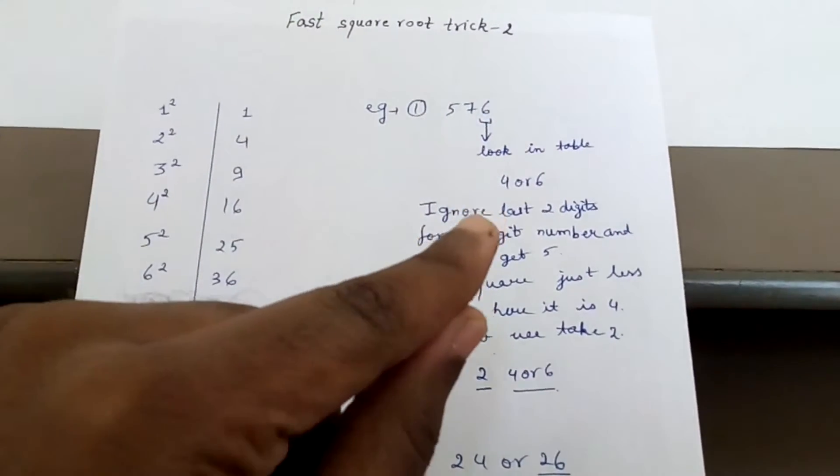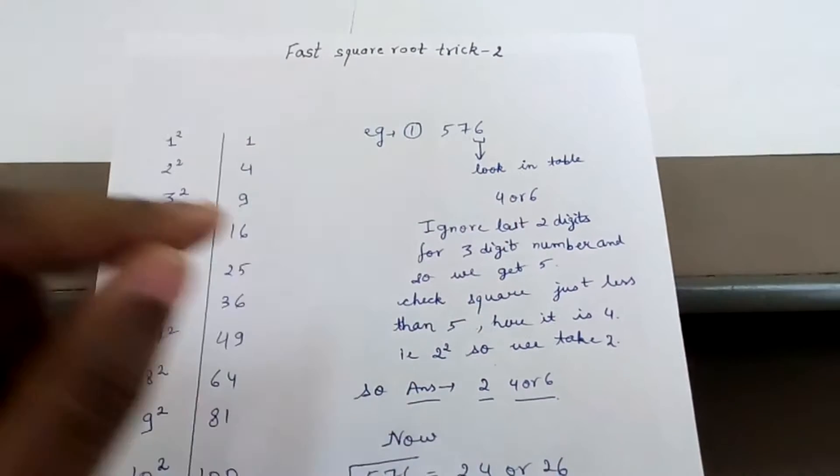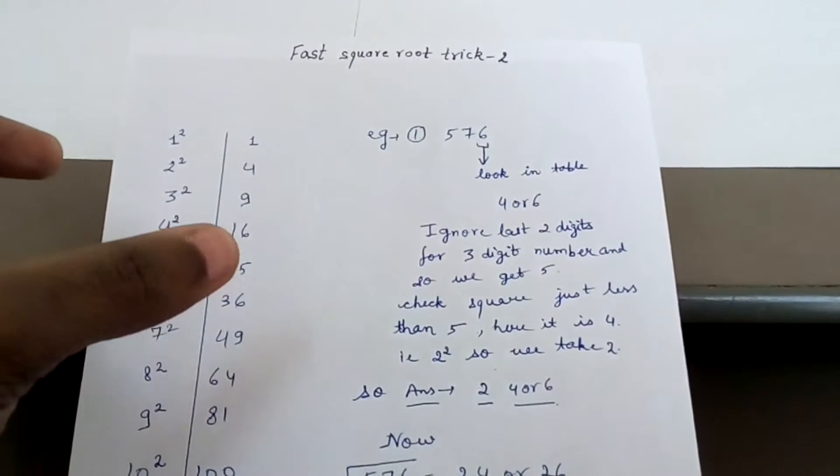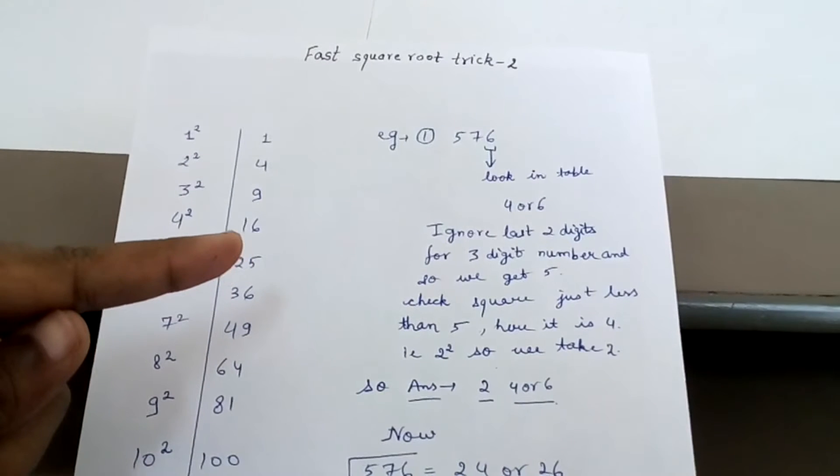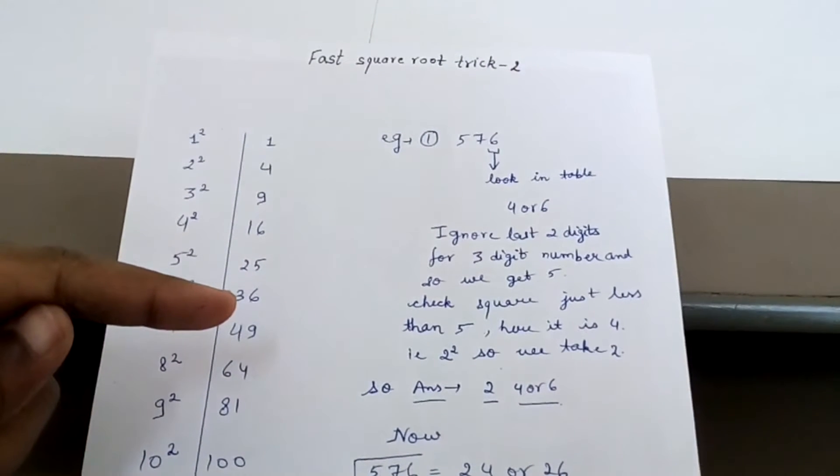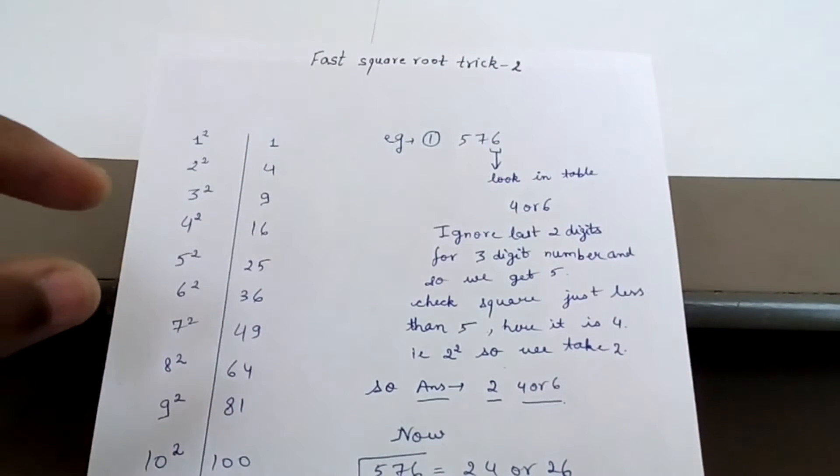What you do is take the units digit, that is 6. Now look in the table where the unit digit comes in the square. Here it comes in 16 and in 36.